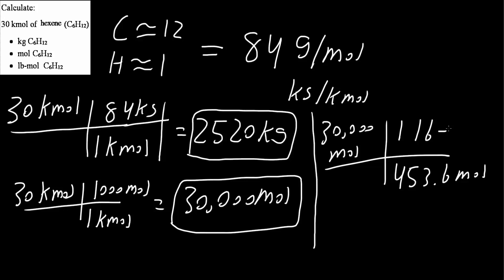And when you divide 30,000 by 453.6, you would get 66.14, and it's going to be pound mole. And that's all we need to do for these three problems.